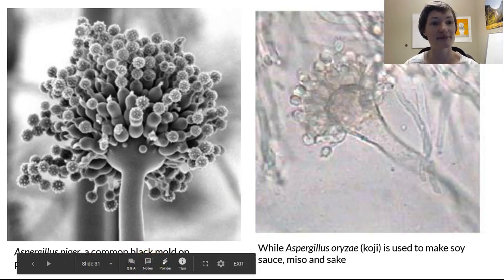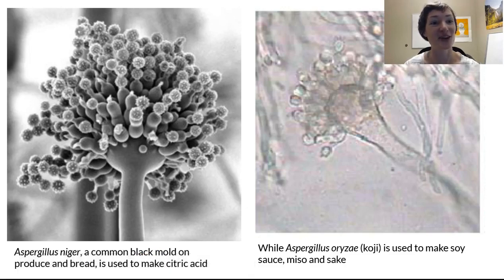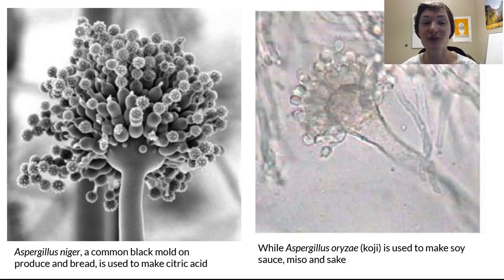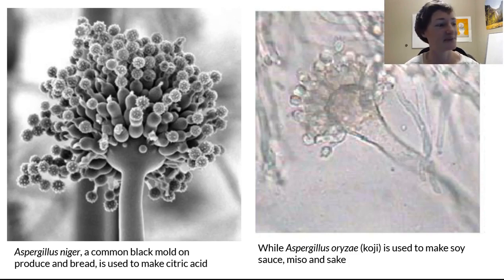That's the end of microfungi. Now you know some things to look for in your labs: find moldy fruit, find weird fuzzy-looking bugs, and look at them under the microscope. You should also be looking in aquatic environments for fungal-like things to observe.